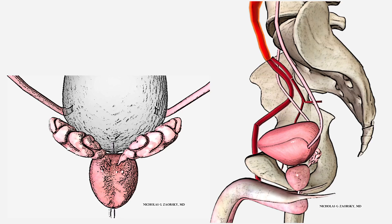Here I'm showing you two figures. On the left side is a view of the prostate from the posterior aspect, and on the right side, this is a sagittal view — a cross-section of the anatomy of the male pelvis. The prostate is this organ right here. The prostate is split into the left and the right lobe. The prostate also has something called a capsule — the capsule is like a peel or rind around a clementine.